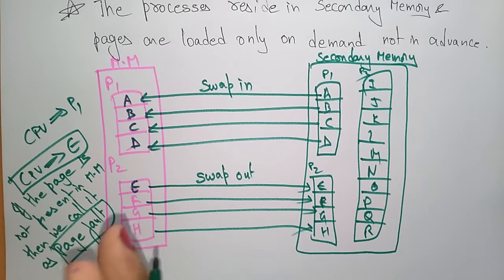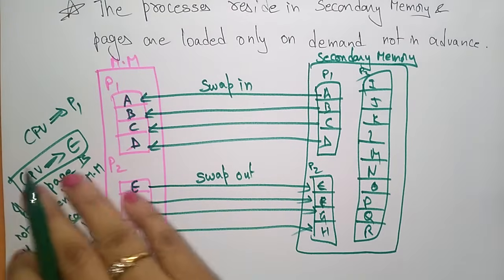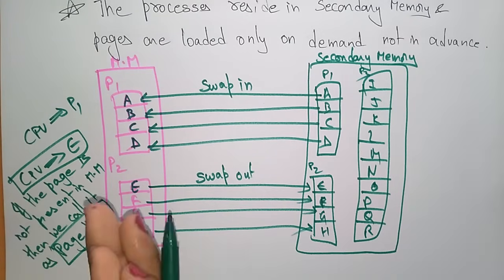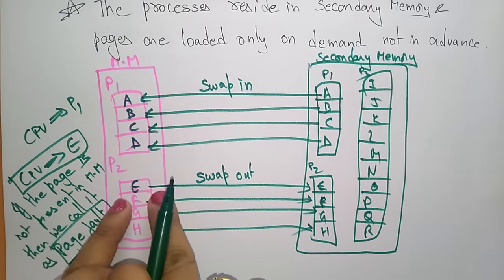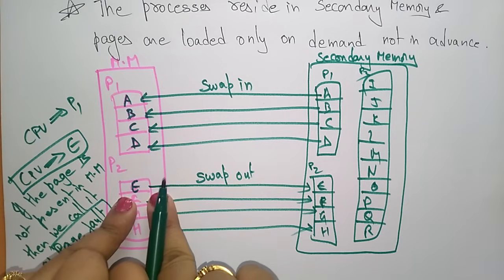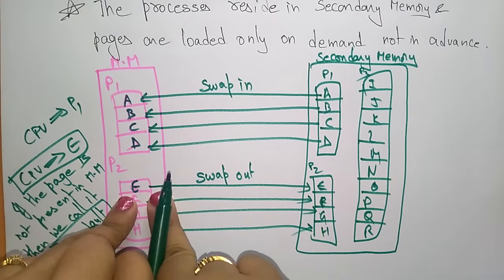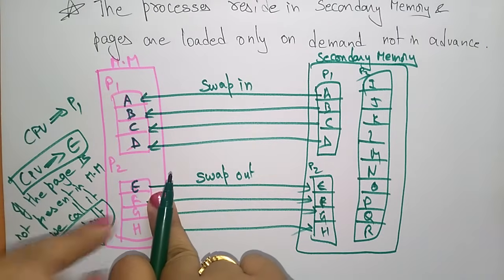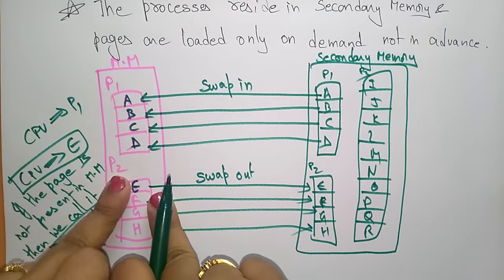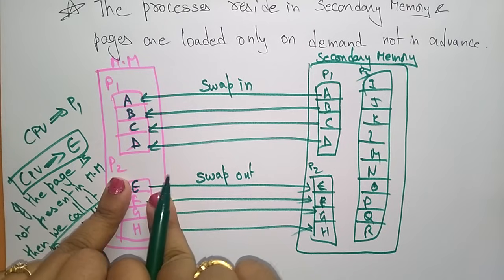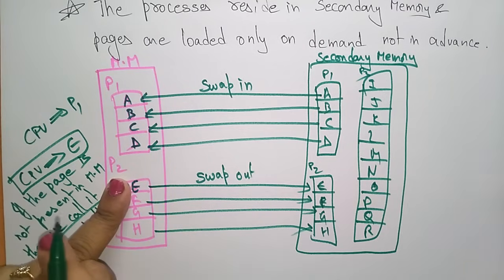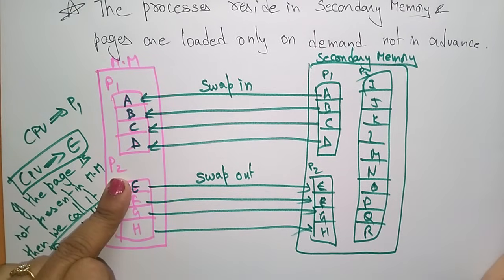So what does the processor do if a page fault occurs? The CPU wants page E, but that page is not present in main memory. Then the CPU transfers control from the program to the operating system to demand the page back into memory.